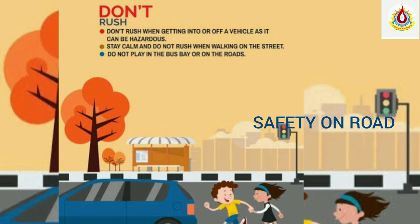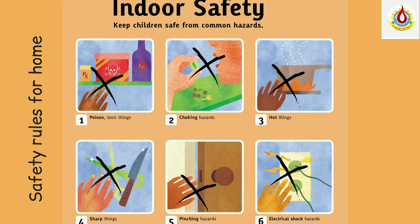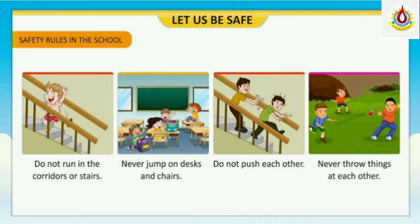Now let us see some self-care. Healthy hand washing tips: wash your hands with soap and water, rinse well, and wipe with a tissue and throw it in the dustbin. Some safety rules for home: don't touch any toxic things or hot vessels, never play with sharp objects, and never touch an electric socket with wet hands.